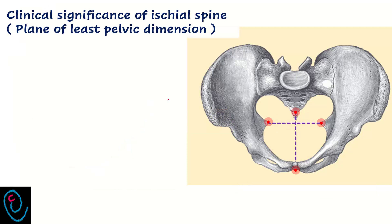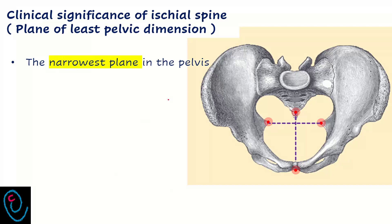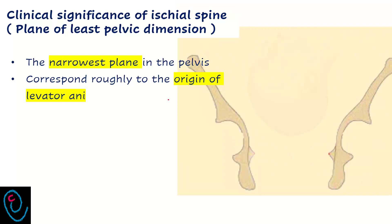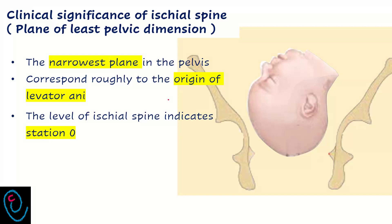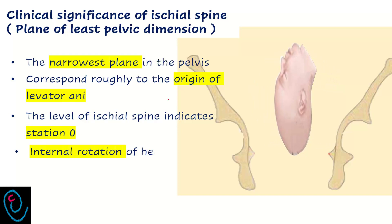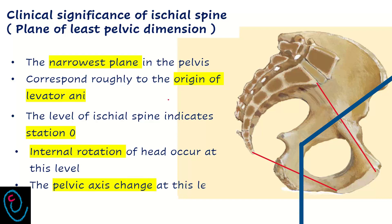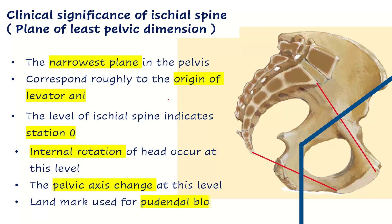The ischial spine is clinically important. It marks the plane of least pelvic dimension, which is the narrowest plane in the pelvis. It corresponds roughly to the origin of the levator ani muscles. The level of the ischial spine indicates station zero. When the presenting part reaches the level of the ischial spine, internal rotation will occur. It also marks the beginning of the forward curve of the pelvic axis and is a landmark used for pudendal nerve block.